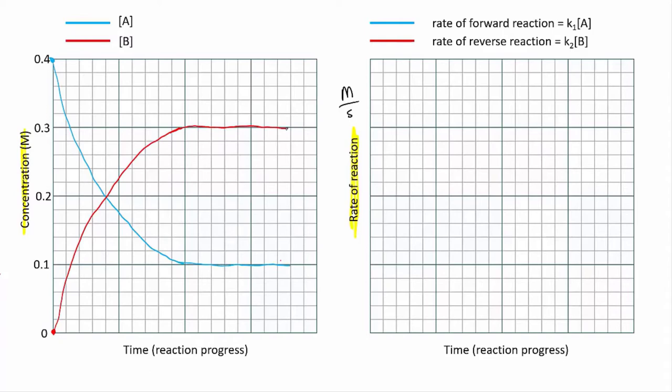Because the concentration of A starts high, the forward rate is also high. And because the concentration of B is initially zero, the reverse rate also starts at zero. But as the reaction proceeds, the concentration of A falls, so the rate of the forward reaction also decreases. Remember, concentration affects rate.